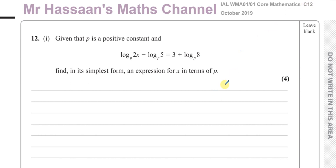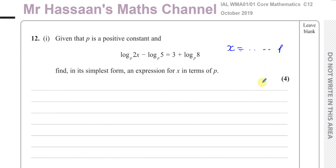This question is about logarithms, which is a P2 topic. We're told that given P is a positive constant and that log base P of 2x minus log base P of 5 equals 3 plus log base P of 8, find in its simplest form an expression for x in terms of P. So our answer should have x equals with P somewhere in it.